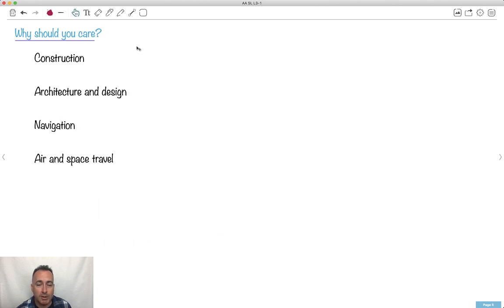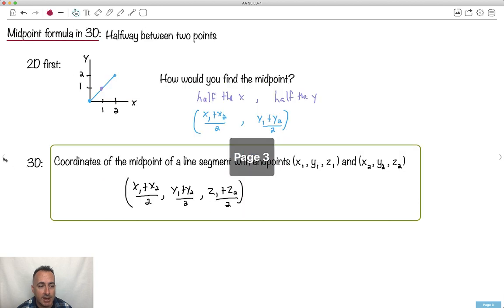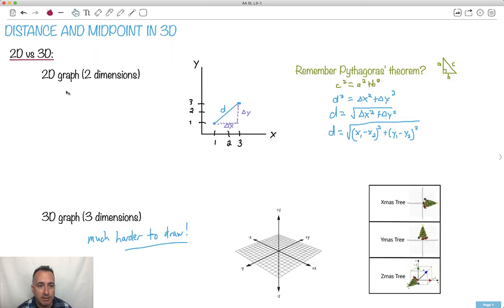This is how we can work with distance and midpoint in three dimensions. Now, why should you care about this? Well, this is helpful in everyday life, depending on what you're doing as a job, at least. If you have to build something, it helps to know distances in 3D. Architects, designers, we use this in navigation. So if you're going to actually get to know where you're going, you have to know about distances, air travel, space travel, all sorts of stuff. So this can actually be important to you in everyday life. Otherwise, it's good to learn because you have it on your test.